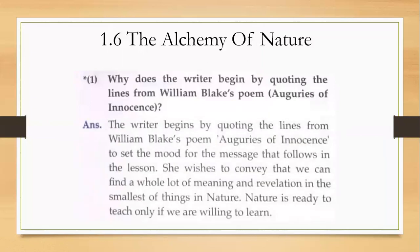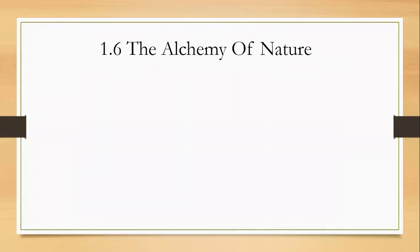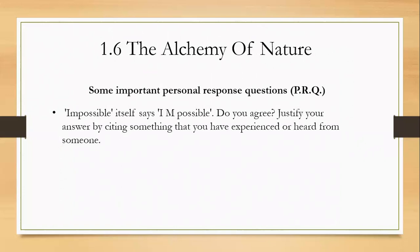What kind of questions can you get in the Alchemy of Nature? Here we have: 'Why does the writer begin by quoting lines from William Blake's poem Auguries of Innocence?' Answer: The writer begins by quoting these lines to set the mood for the message that follows in the lesson. She wishes to convey that we can find a whole lot of meaning and revelation in the smallest things in nature. Nature is ready to teach only if we are willing to learn — a very good message given by Raksha Bharadia. One important question to practice is: 'Impossible itself says I am possible — do you agree? Justify your answer by citing something you have experienced or heard.'